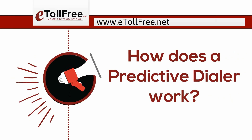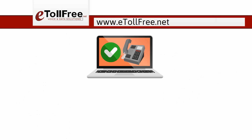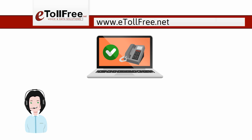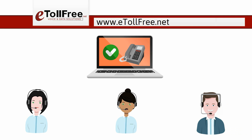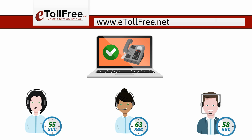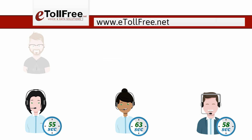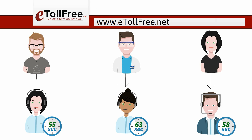How does a predictive dialer work? Simply put, a predictive dialer checks how many agents are logged in at a given moment and their average call handling time, makes the calls, and then patches those live calls to the agent.